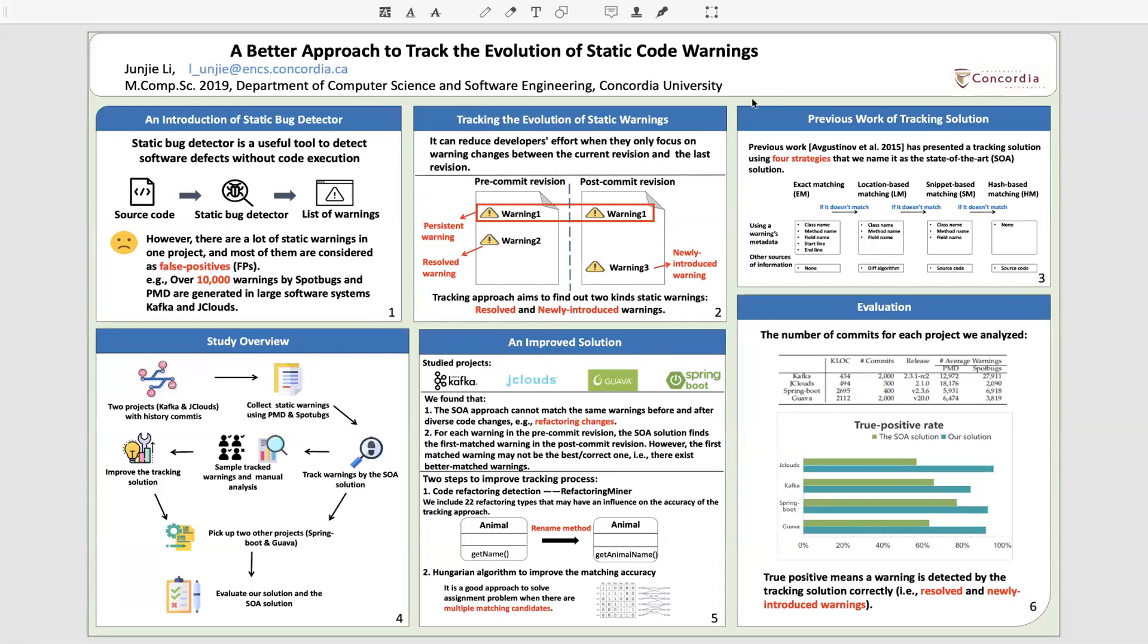Hi, I'm Junjie Li from Concordia University. Our research is a better approach to track the evolution of static code warnings.